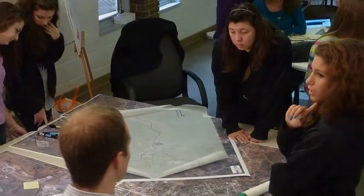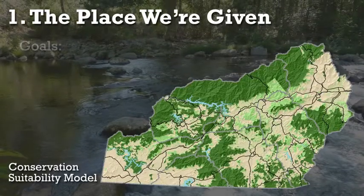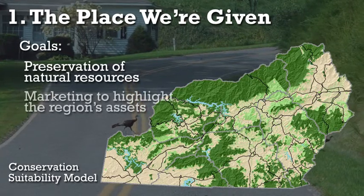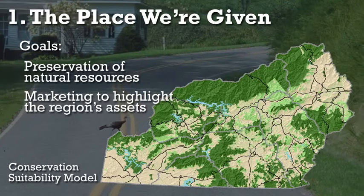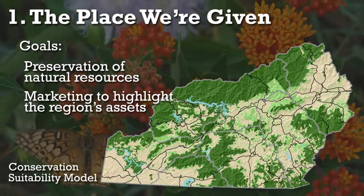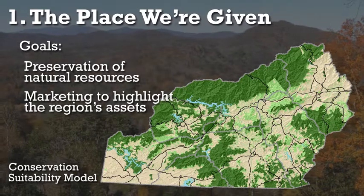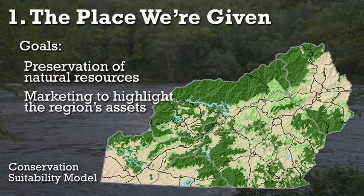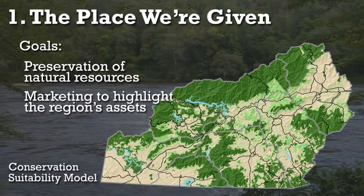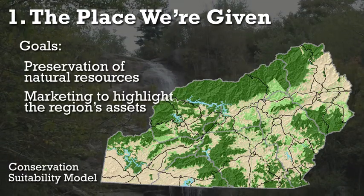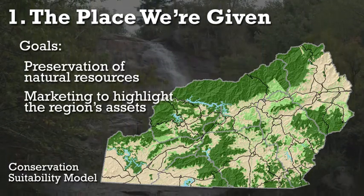For pillar number one, the place we're given: development should preserve important environmentally sensitive and scenic lands, and should be compatible with and respect the quality of life the region already enjoys. For example, these principles might help to maintain and preserve a high standard of water quality, which is so important to the health of the natural world and the economy of the region. Healthy watersheds help to support our farmers, promote local agriculture, and allow the region to continue being a leading destination for tourism, outdoor recreation, and artistic inspiration.